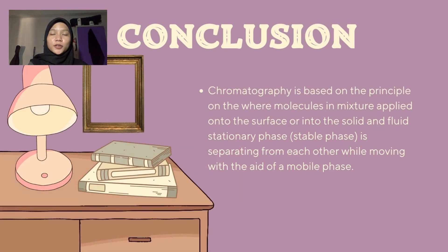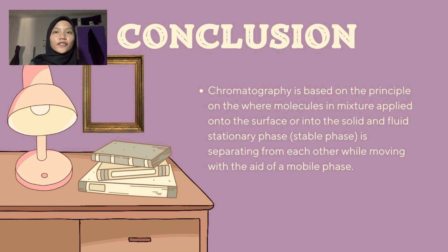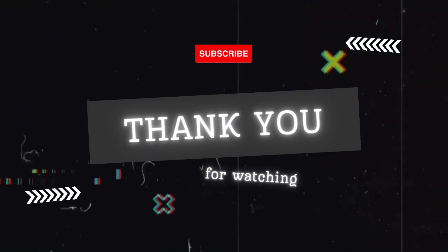In conclusion, chromatography is based on the principle where molecules in a mixture applied onto the surface or into the solid and fluid stationary phase are separated from each other while moving with the aid of a mobile phase. We conclude that chromatography is an effective way of determining the components present in a compound such as a mixture of pigments, as well as in identifying the type of amino acid present in a solution.